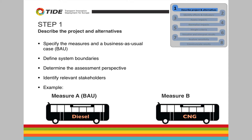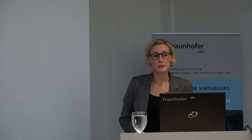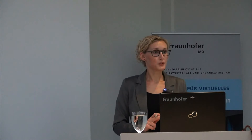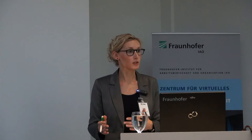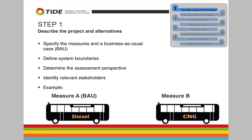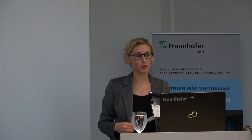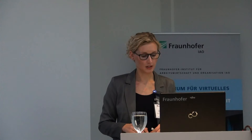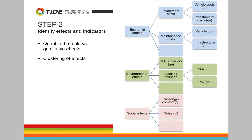The CNG buses are the other option, and of course you can include additional ones like electric buses. Then you have to specify how many buses you will buy, what the lifetime is, whether the buses vary in capacity, and whether you need additional infrastructure for the CNG buses. It's important to specify this in the first step to set the overall framework for the assessment. It's also important to define the system boundaries — where you should take the effects into account — as traffic measures can have effects outside the main area. It's also important to identify relevant stakeholders for the further process.